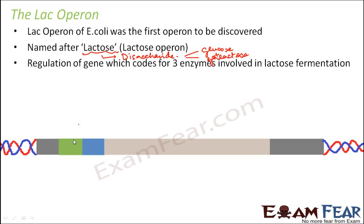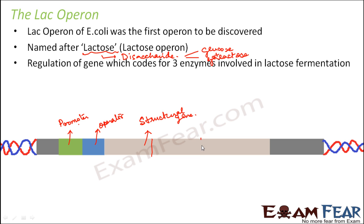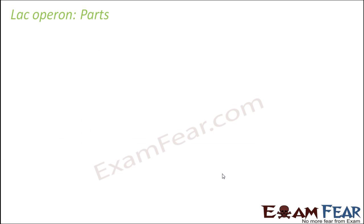Looking at this figure, you can see the green colored region which is the promoter for the lac operon, then this region is the operator, and then this region is the structural gene. Within the structural gene region there are three genes present — gene 1, 2, and 3 — which are responsible for producing the enzymes. We will see what these three genes are and how they code for proteins acting as enzymes for lactose fermentation.